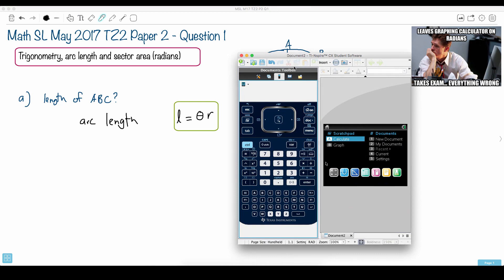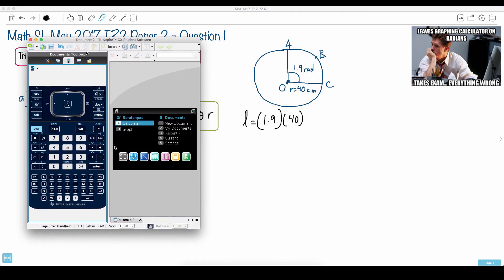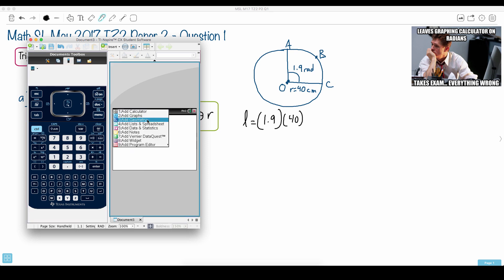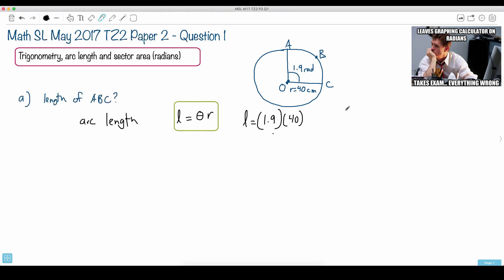We can bring up our trusty calculator to do that. And remember, if you're using a TI Inspire, it helps to do maybe a new document, for example, or a calculator. Now let's go 1.9 times 40. And there we go. So 76. That's our answer.